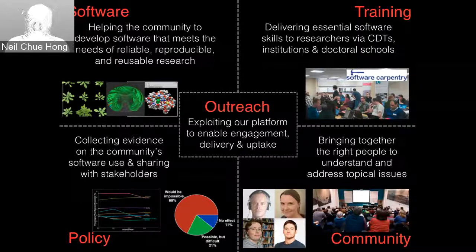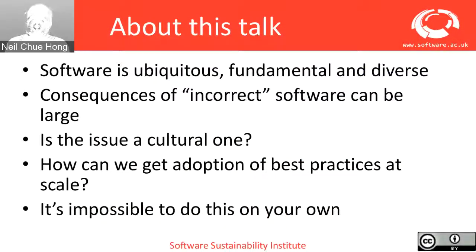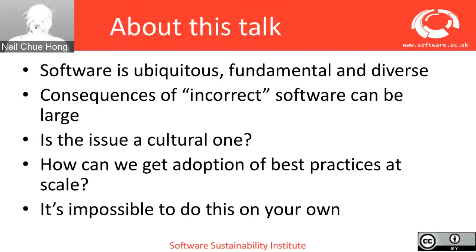This is what the Software Sustainability Institute was set up to do in the UK — a national facility for cultivating better, more sustainable research software to enable world-class research. We do a number of different things: working with people and different research groups to improve specific pieces of software in plant science, nuclear fusion, or biochemistry; delivering training; bringing together people through community initiatives including events and our fellowship program; and collecting evidence to help stakeholders define policy and guidance.